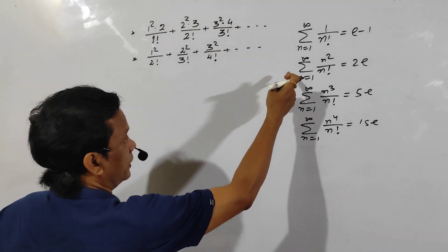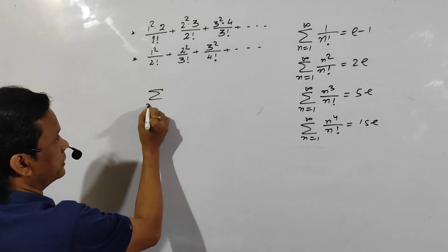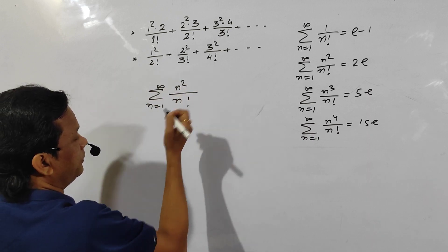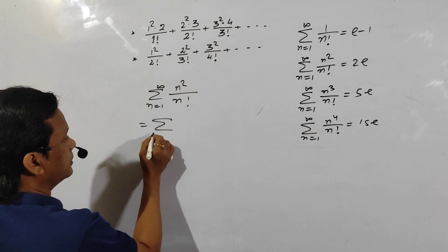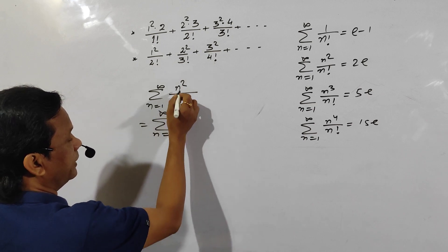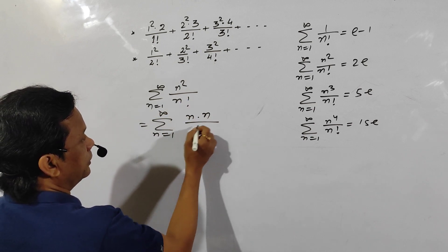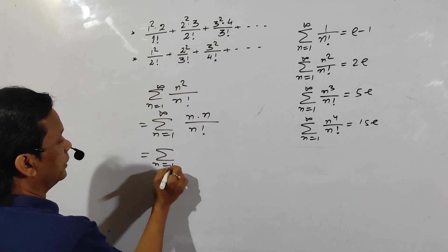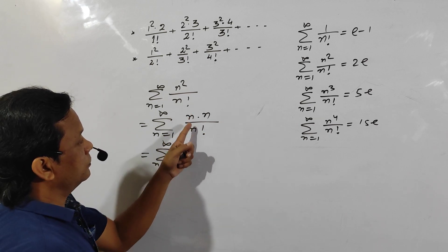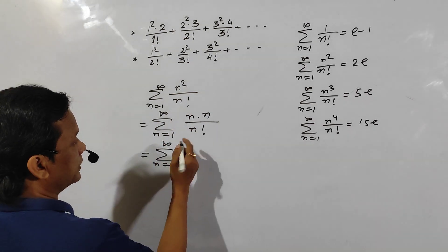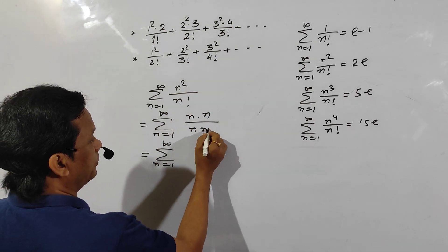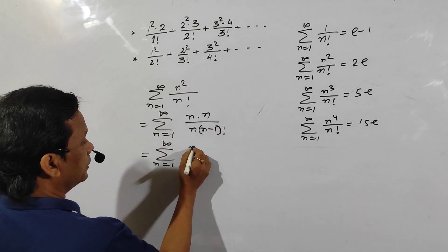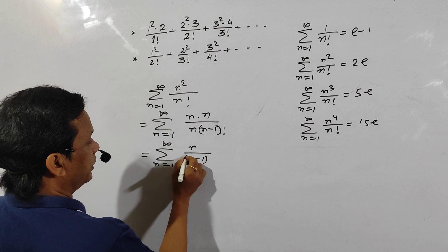Let us see. I am doing this one: summation n equals 1 to infinity of n² divided by n factorial. This can be written as summation n equals 1 to infinity of n times n divided by n factorial. One term will cancel out because n factorial can be written as n times (n-1) factorial, so n cancels out, leaving n divided by (n-1) factorial.